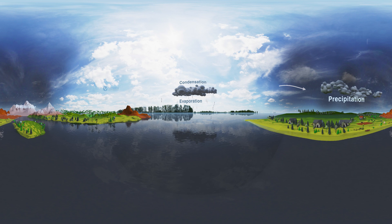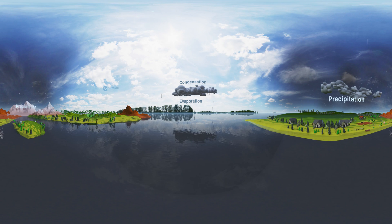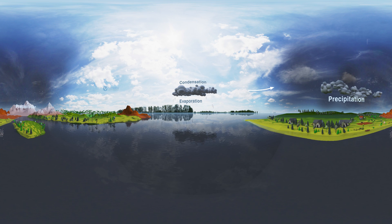Condensation. The water vapor which enters into the atmosphere by evaporation moves upward with air, gets cooled and changes into water droplets in the clouds. It is called condensation.